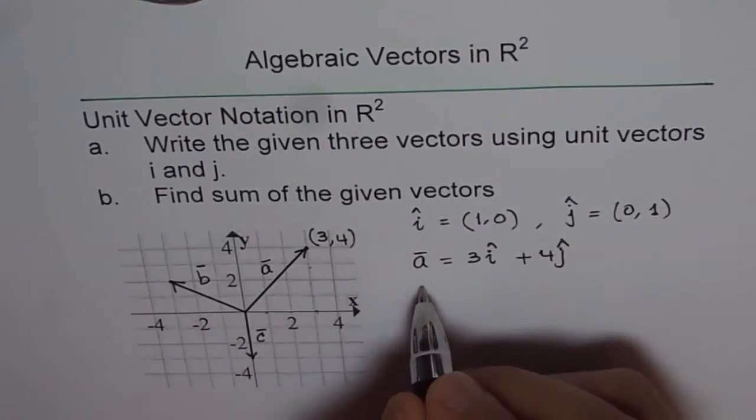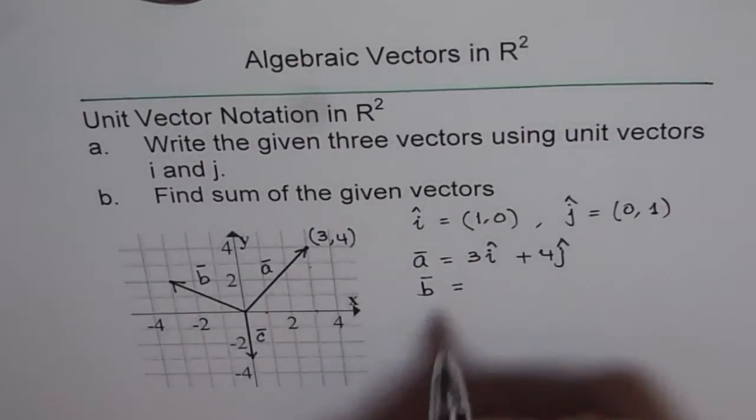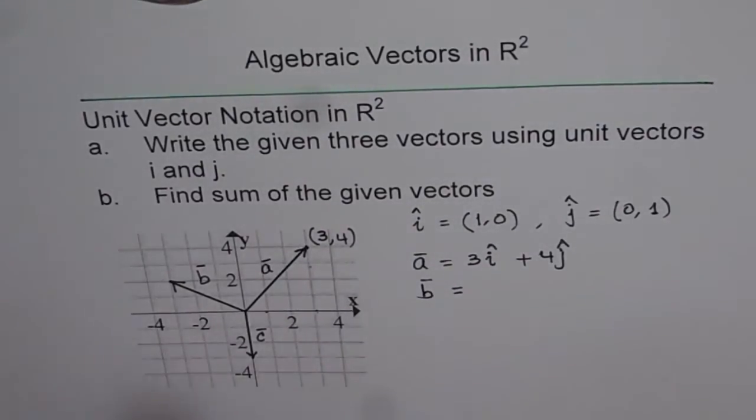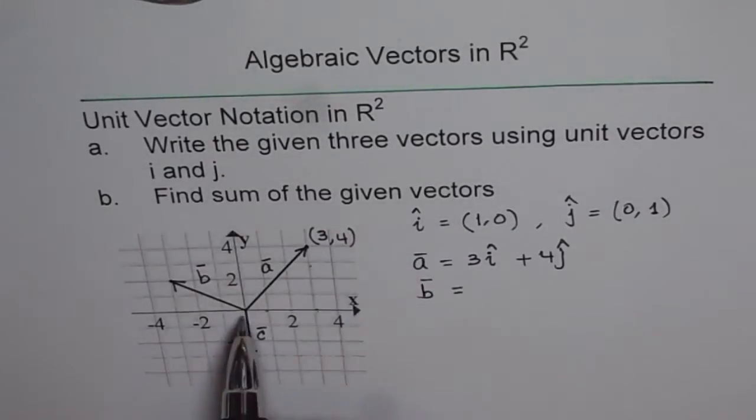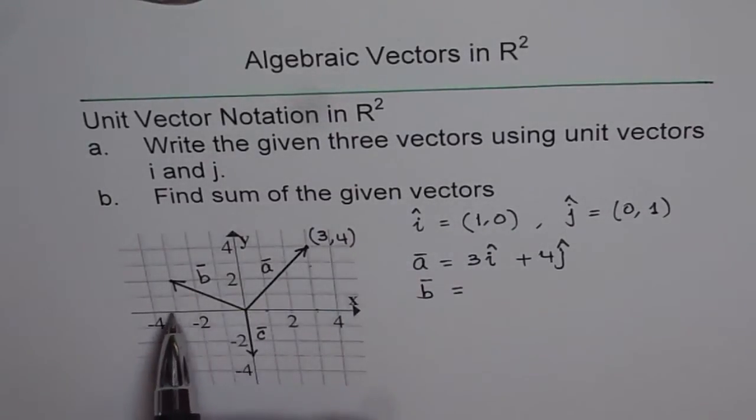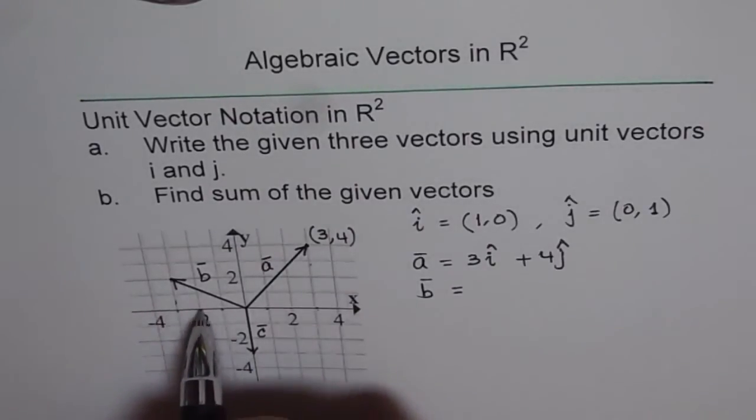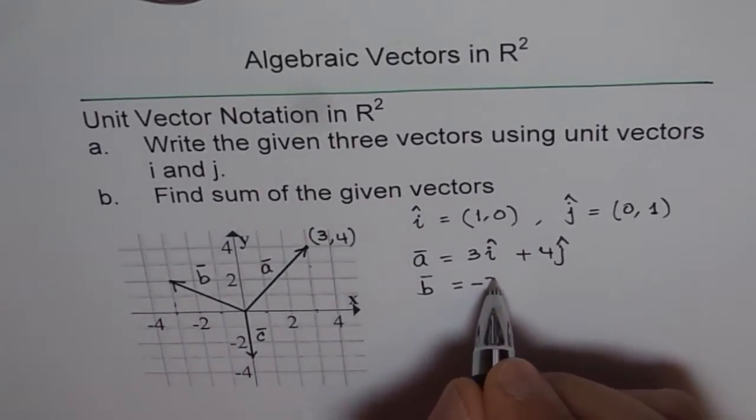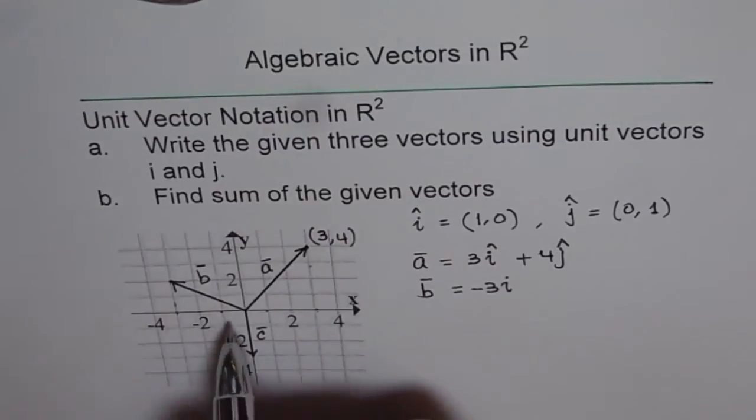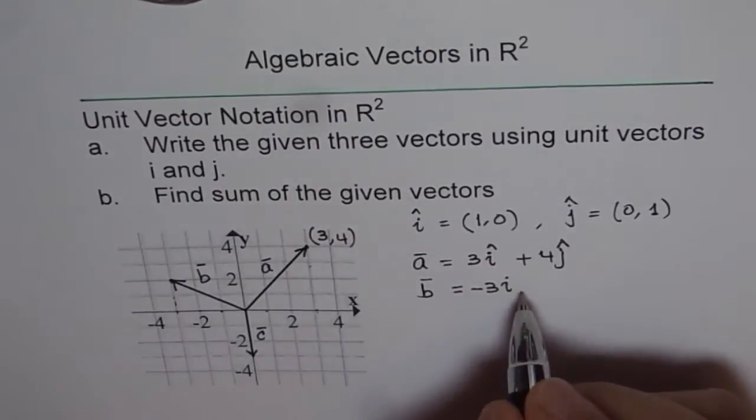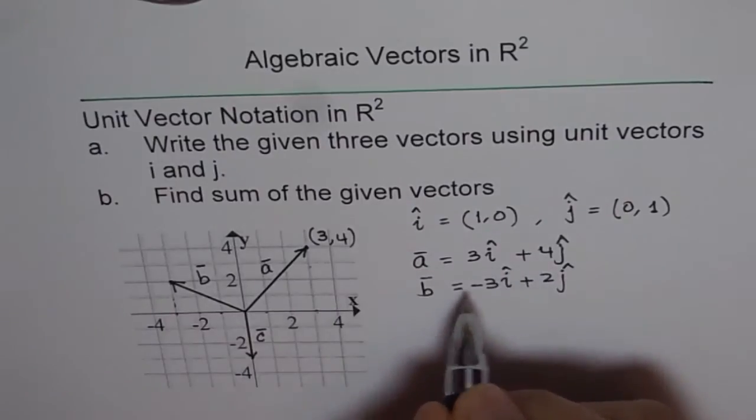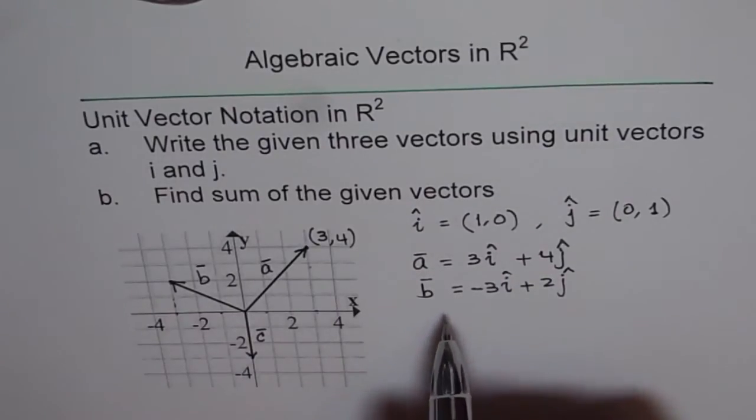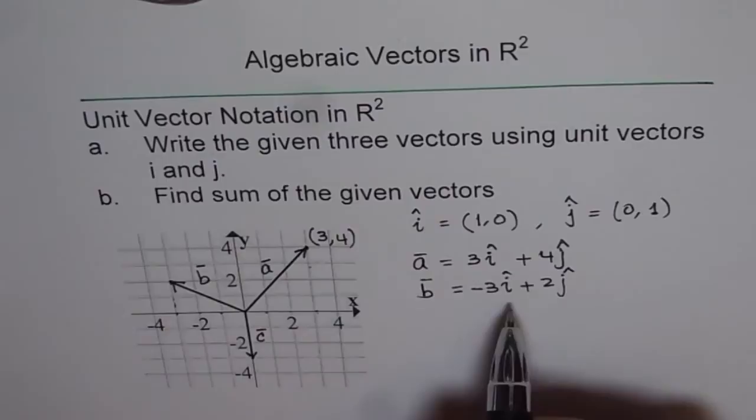Similarly, we'll write vector B in the form of unit vectors. Now this direction is minus i. It's going in minus x direction. So the component here is 3. So it's minus 3i. And for the y component, it is 2 units plus 2j. So that is vector B in terms of our unit vectors i and j.